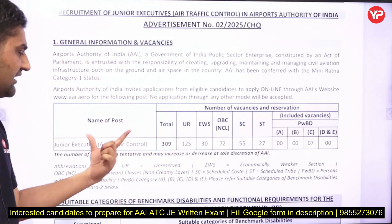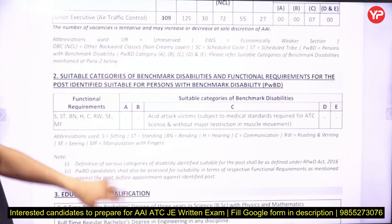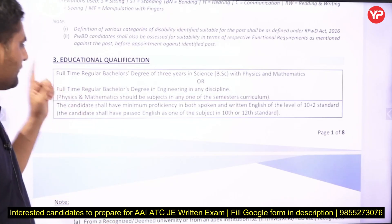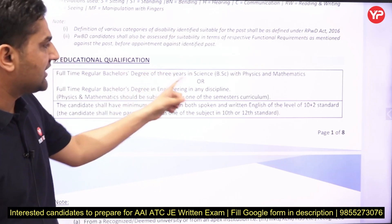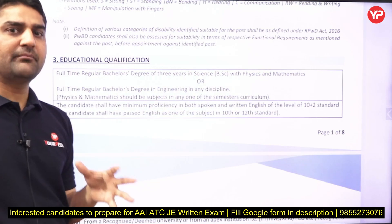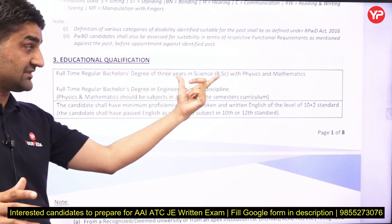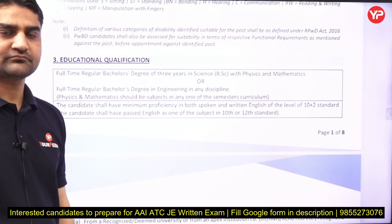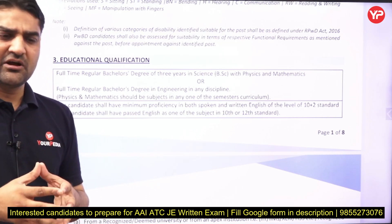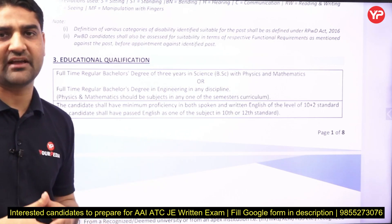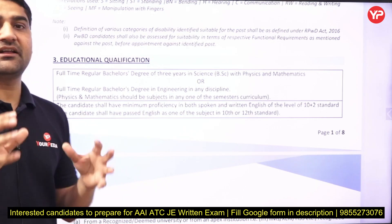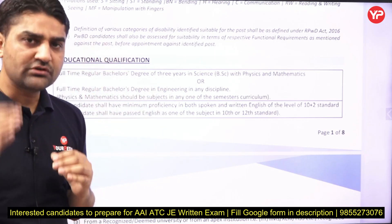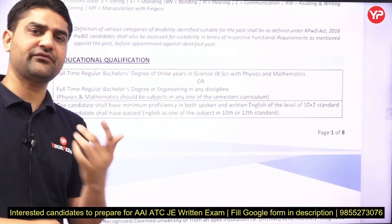There are 309 vacancies for Air Traffic Controller announced. Regarding education qualification, it should be a regular full-time degree of three years in Science — BSc with Physics and Mathematics. You should have studied either Physics or Mathematics as a subject in your BSc. The subject must be explicitly mentioned on your DMC — your detailed mark sheet. The same is applicable for engineering students.